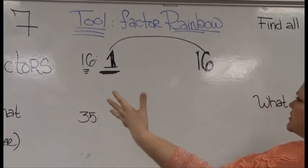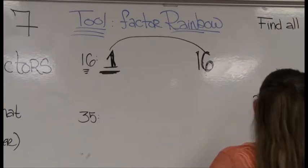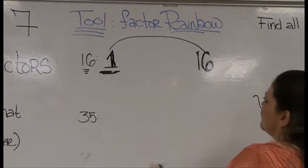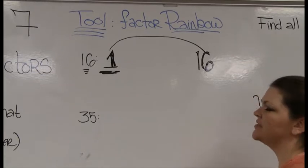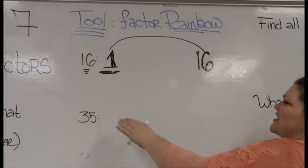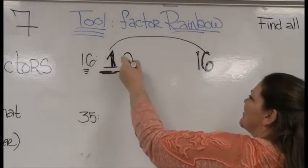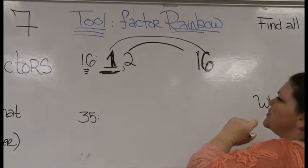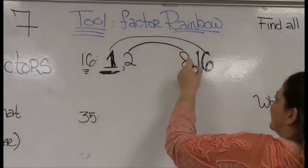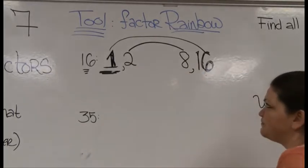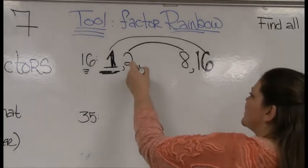It's going to feel a little counterintuitive going back and forth, but it's important to this process so we find all the factors. The next number after 1 is 2. Does 16 divide by 2? Since 16 is an even number, indeed it does. Now ask yourself: what's the other side of that fact? 2 times what equals 16? That's 8. So I've got two more factors: 2 and 8.